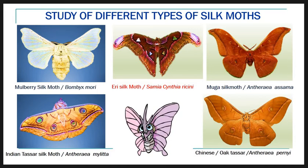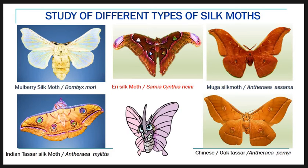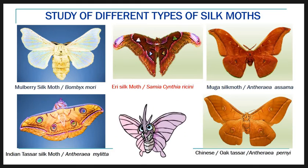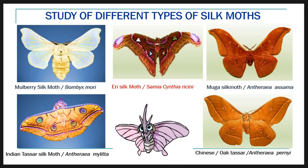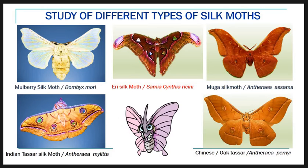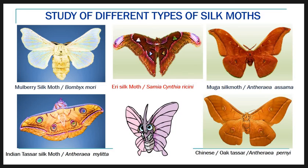The biological name of the eri silk moth is Samia cynthia ricini. It is reared on castor leaves and yields eri or errantly silk. The biological name of the muga silk moth is Antheraea assamensis. It is a multivoltine, semi-domesticated species chiefly found in Assam, and it yields muga silk.